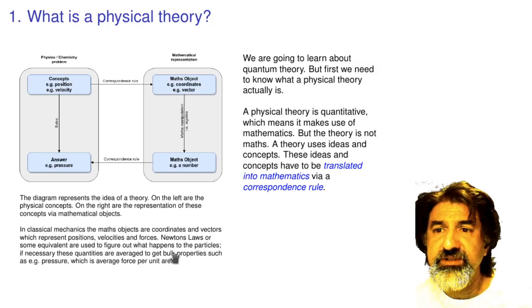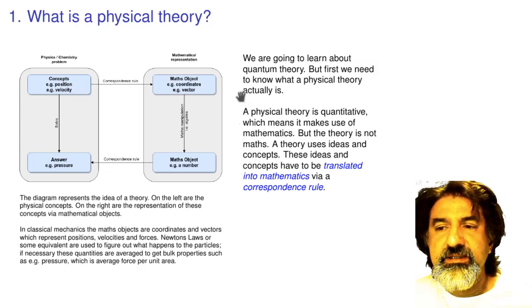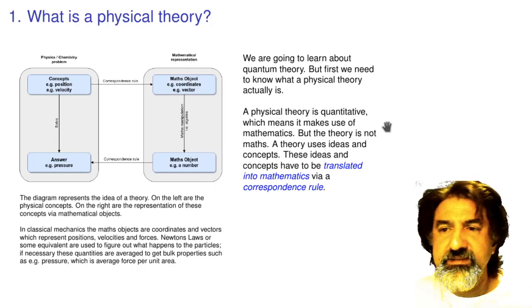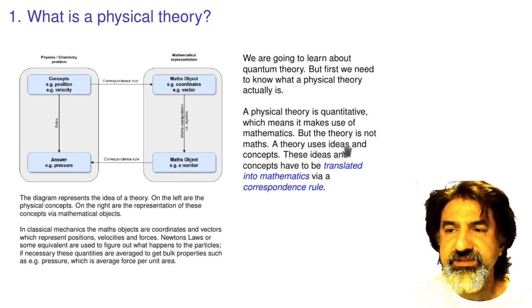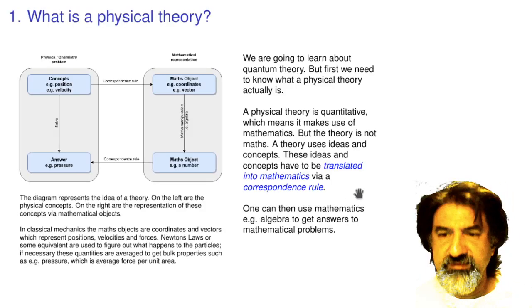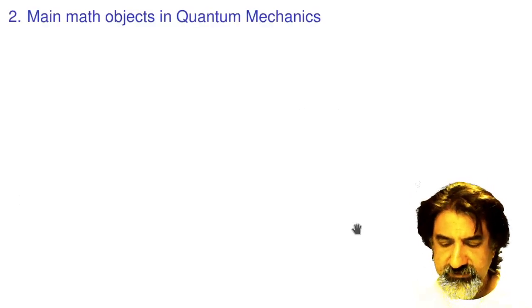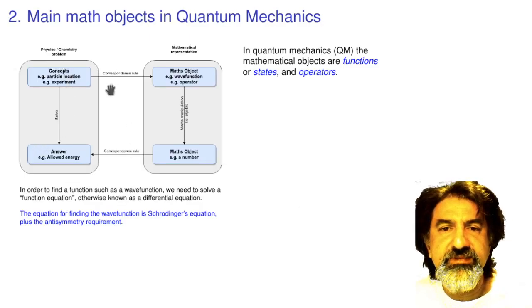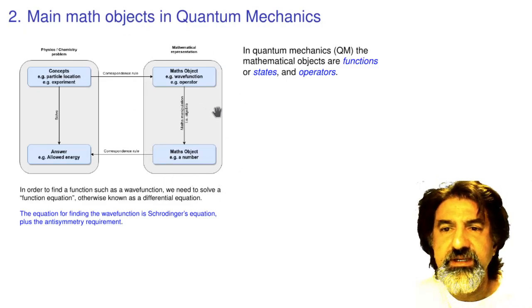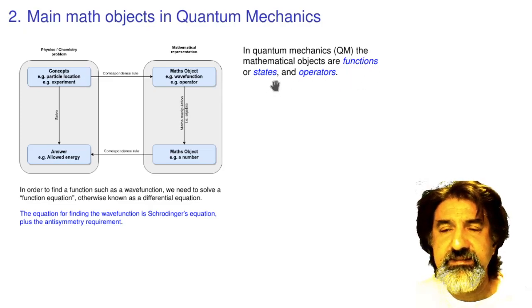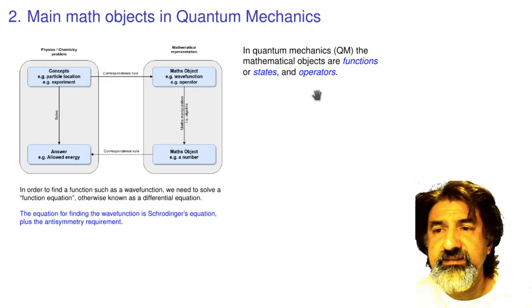In quantum theory, the objects are different. A physical theory is quantitative and makes use of mathematics. The main objects in quantum mechanics are not positions — they are functions. Another word for a function in this context is a 'state'. That's one critical object in quantum mechanics. The other key object is the operator.